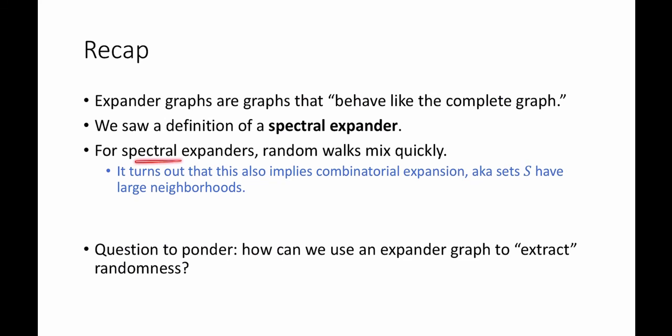The definition is that the second largest eigenvalue in absolute value of the normalized adjacency matrix is decently small. And we proved that for spectral expanders, random walks mix quickly. It turns out that spectral expansion also implies combinatorial expansion, like we talked about at the beginning, aka all sets S have large neighborhoods. Although we didn't show that here.